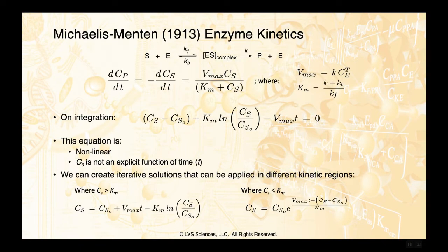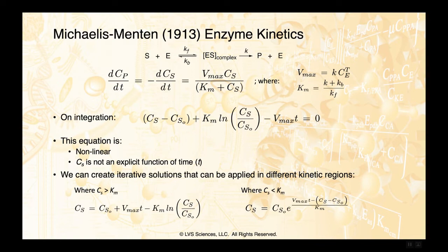Michaelis and Menten won the Nobel Prize for their 1913 paper describing enzyme kinetics. I'm not going to go through the derivation — you can find that in the textbook along with the 1913 reference, or at least a translation of it. In basic steps, we rapidly form an enzyme-substrate complex, which reaches a quick pseudo-steady-state concentration, and the substrate is converted into product.